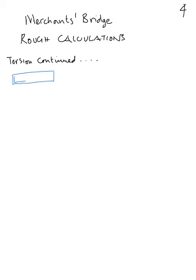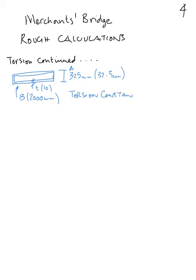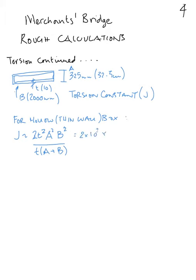For our idealized box section which is 10mm wall thickness and 325mm deep and 2000mm wide, the torsion constant J can be worked out using a formula from Roark for a thin wall box. It's approximately 2T²A²B² over T(A+B) where A and B are the dimensions, 325 and 2000.